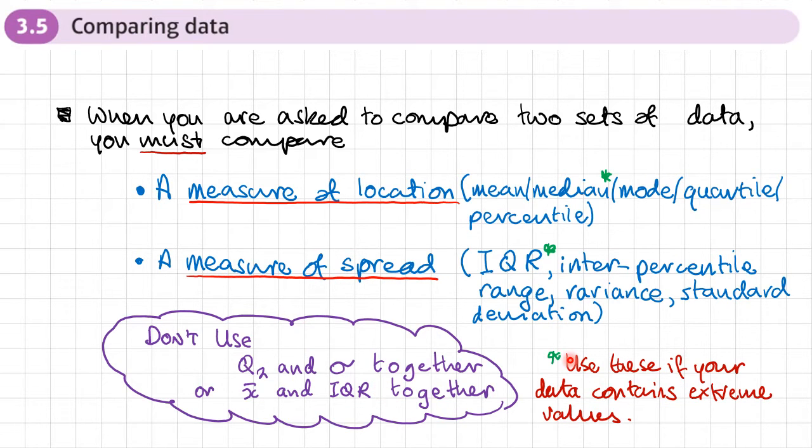And you may find your data contains extreme values. If it does, then it's best to use the median and the interquartile range as your ways of comparing the two sets of data, because both the median and the interquartile range will exclude any extreme values.